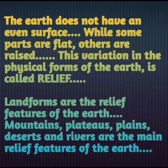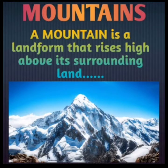The first landform is a mountain. A mountain is a landform that rises high above its surrounding land — so as compared to the surrounding area, the mountains are high above. When many mountains are connected together, it is known as a chain of mountains or a mountain range. Basically, a group of mountains joined together is called a range or a chain.